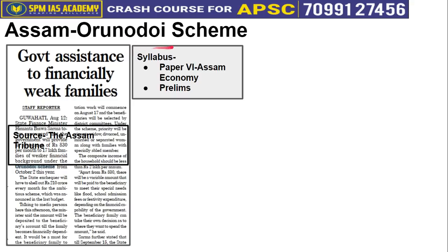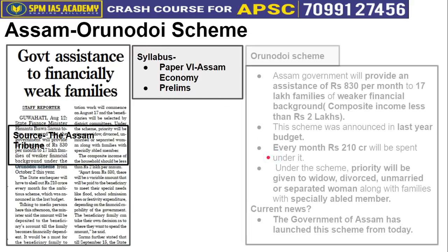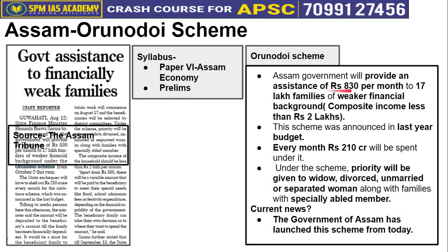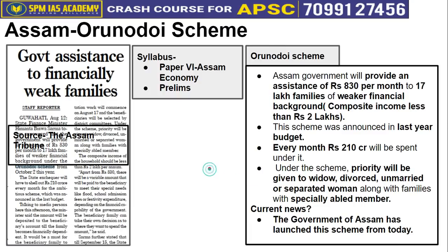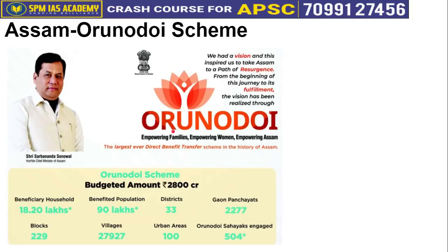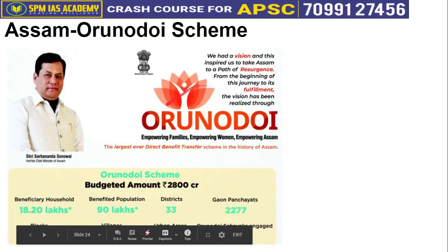The next article is taken from the Assam segment — it talks about the 'Orunodoi' scheme, which provides financial assistance to 17 lakh families of weaker financial background whose overall composite income is below 2 lakh. This scheme was announced in last year's budget but is being implemented this year. Every month, about 210 crore rupees will be spent under this scheme. Priority will be given to widow, divorced, unmarried, or separated women, and families with specially-abled members. The government of Assam has launched this scheme today. Overall, 8 lakh households will benefit, covering a population of 90 lakh across all districts.